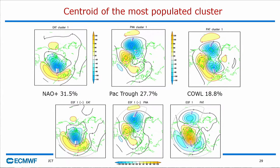The question is: maybe this is just a random combination — sometimes you have the positive NAO, in other days you have the Pacific trough, completely independent, and sometimes they happen to have the same sign. However, if this were the case, the frequency of the combined regime should be just the product of the individual frequencies. If you turn this into a fraction, this is 0.3, this is 0.3, so the product should give you 0.09. And instead it's 0.19. So this suggests that there is some mechanism that makes the combination of the positive NAO and the Pacific trough more likely than what you would expect from a random combination.